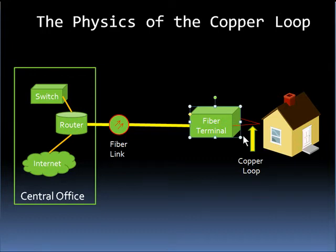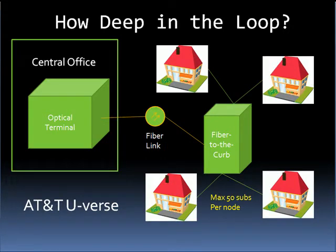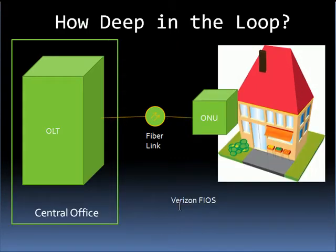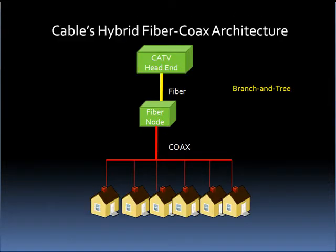Thus, we conclude that the shorter the fiber-optic terminal is to the customer's house, the greater the bandwidth the customer can receive. The two surviving Baby Bells have decided to deploy different architectures for serving fiber to their customers. AT&T has chosen its U-Verse architecture, which deploys the fiber terminal curbside and serves a maximum of 50 homes from each such node. In comparison, Verizon's FIOS system has taken an ONU, a fiber-optic terminal, and terminated it all the way on the side of the customer's home, thus providing a fiber for each of their customers. Cable uses its old hybrid fiber coax architecture, which terminates a fiber somewhere in the neighborhood and serves a cluster of homes, often in the hundreds.